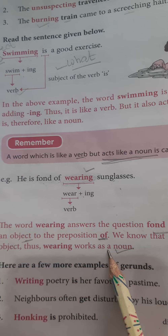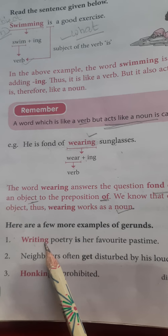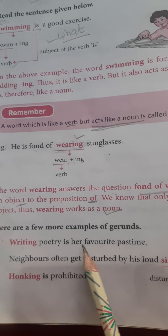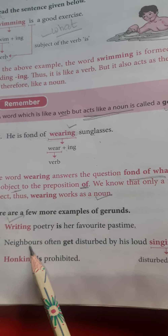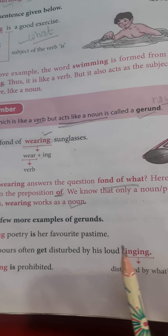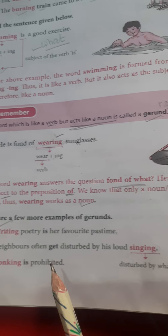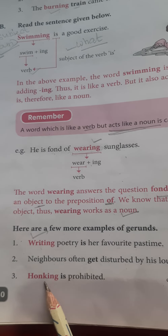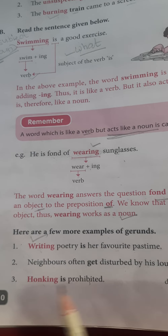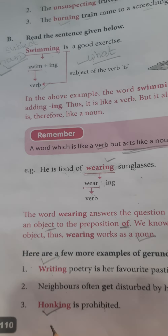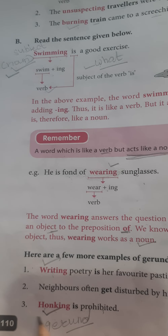Here we have a few more examples of gerunds. First: 'Writing poetry is her favorite pastime.' What is her favorite pastime? Writing poetry — so 'writing' is working as a gerund here; it is the subject. 'Neighbors often get disturbed by his loud singing.' Disturbed by what? Singing — so 'singing' is working as a gerund. 'Honking is prohibited.' What is prohibited? Honking — so 'honking' is working as a gerund, as the subject of this sentence.